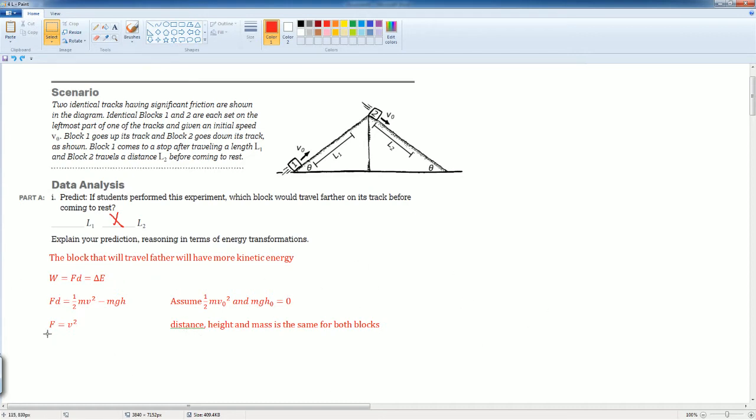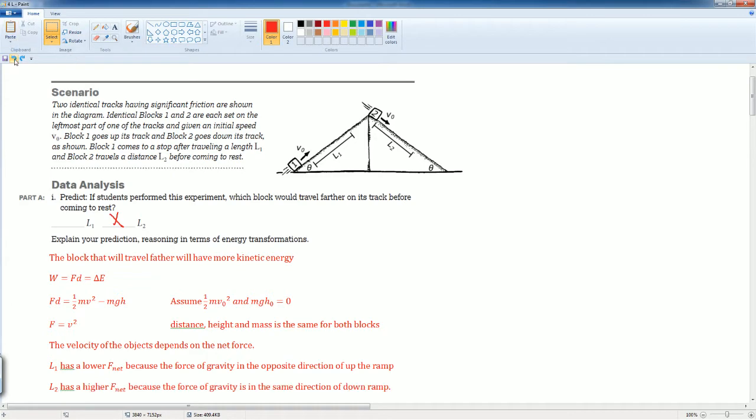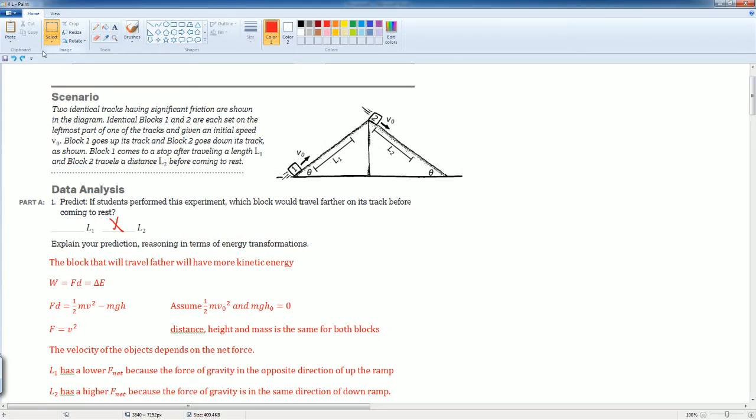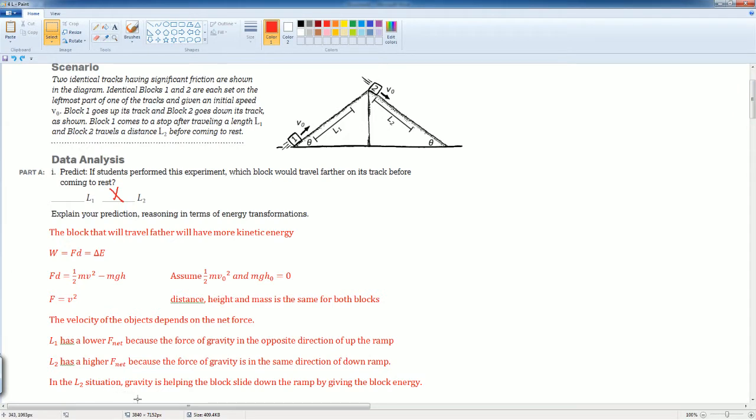I can cancel out distance, the masses, and the height because they're the same for both blocks. I'm just comparing them. Okay, so the only thing that changes is actually the force and the velocity. I noticed that the velocity of the object depends on the net force. I can say that L1 has a lower F_net because the force of gravity is in the opposite direction of the ramp, where L2 will have a higher F_net because the force of gravity is in the same direction as the ramp.